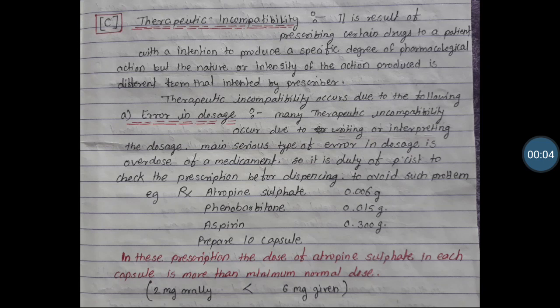In the last video we studied physical incompatibility and its types: immiscibility, insolubility, precipitation, and liquification. Now in this video we are going to study about therapeutic incompatibility. It is the result of prescribing a certain drug to a patient with the intention to produce a specific degree of pharmacological action, but the nature or intensity of the action produced is different from that intended by the prescriber.